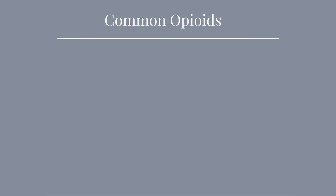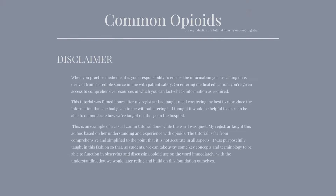This opioid tutorial is super nice and basic, which is really what's needed at this point. There are lots of different potencies, routes of administration, and time courses. We'll focus on the common opioids to make this consumable - reproducing a quick tutorial from my reg on radonc. The main indications are acute pain and cancer pain, very relevant on a chemo and radonc rotation.